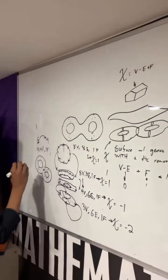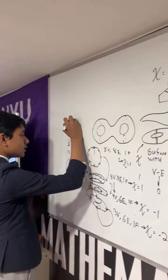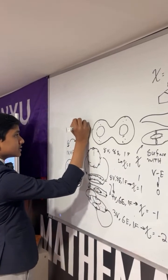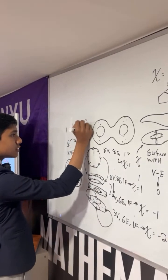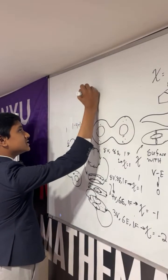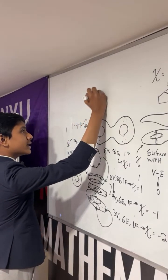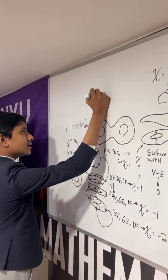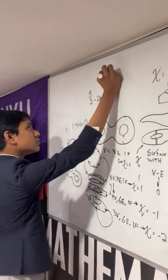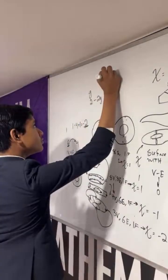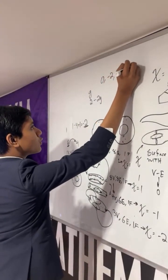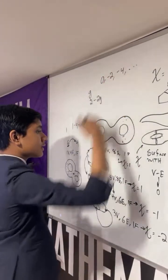In fact, for any surface of genus g, the Euler characteristic is going to be two minus two times g. The original torus has genus one, so it's zero. This double torus gives minus two. The triple torus would give minus four, and so on.